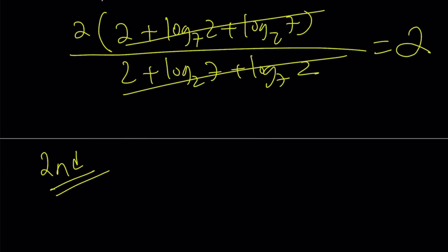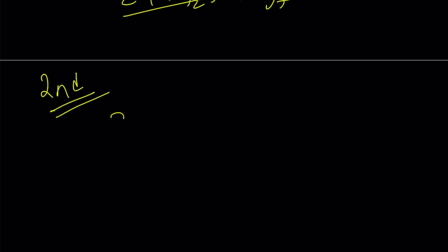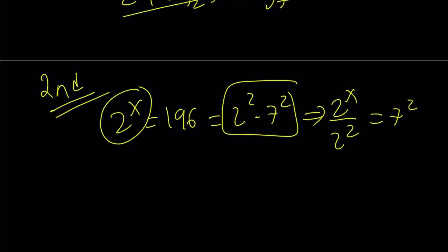Second method. My second method basically uses exponentials. So let's take a look at the second method. 2 to the power of x equals 196. I'm going to write it as 2 squared 7 squared. And from here, by setting these equal to each other, I'm going to be able to divide both sides by 2 squared. And that's going to look like this. All right. And that means 2 to the power of x minus 2 is 7 squared. So that's one of the equations that I'm going to be using.